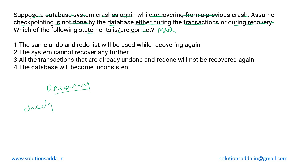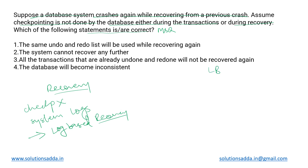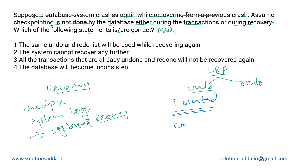Without checkpoints, the other option we can use for recovering is the system logs — the log records that are stored — and we perform log-based recovery. In log-based recovery, we have two operations: we can either undo a transaction or redo a transaction. We undo a transaction when it had started but the crash took place before it could either commit or abort — it simply started and then the crash happened.